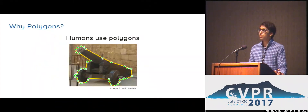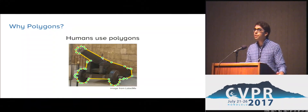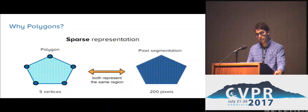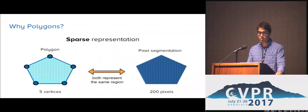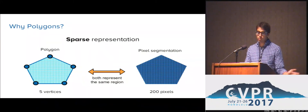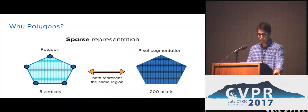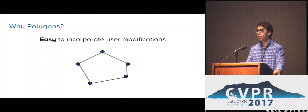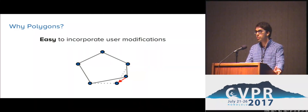A polygon is a natural form of annotation. Current instance segmentation datasets are annotated by humans using polygons. The reason is that a polygon is a sparse representation of an image region — in the image below, five polygon vertices represent the same image area as 200 pixels. Since it's a sparse representation, in a polygon it's easy to incorporate user modifications. If we want to modify the image region, we can add, delete, or move vertices.